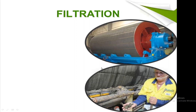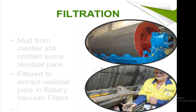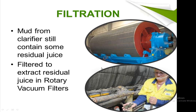In the filtration process, juice is filtered and mud is separated from the juice. The juice and mud from the clarifier still contain some residual juice, which is further extracted using rotary vacuum filters.